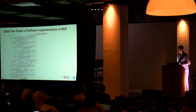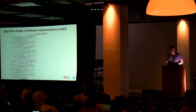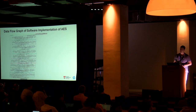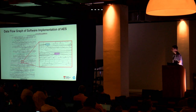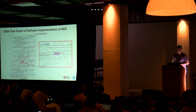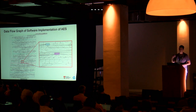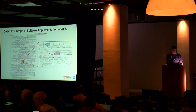Let me first motivate this work. We are looking at the data flow graph of an Android software implementation of AES. We can zoom in and see there are plenty of nodes — over 2,000 data nodes. In case we want to analyze them manually, it is not very convenient and it really takes a lot of time.